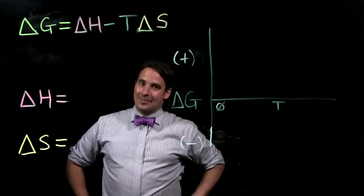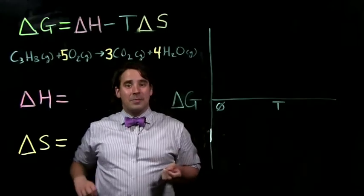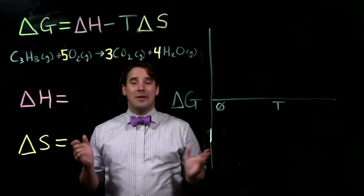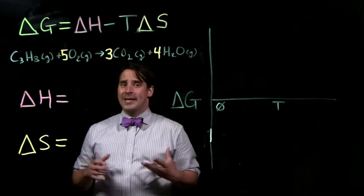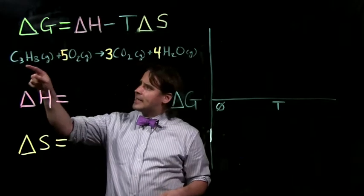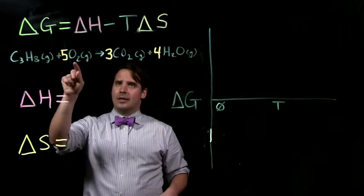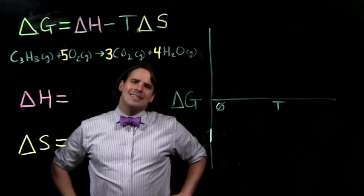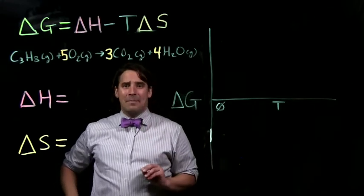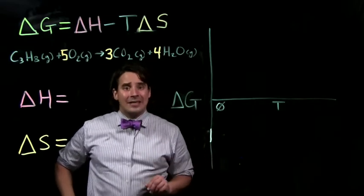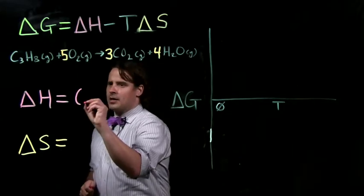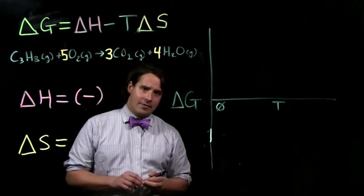Let's take a look at some examples. The first example is a form of combustion — the most classic type in general chemistry. We take a hydrocarbon, in this case propane, react it with oxygen, and get carbon dioxide and water as products. It's important to recognize that anytime you see a combustion reaction, you're looking at an exothermic reaction. So we know right off the bat the sign of delta H is negative.